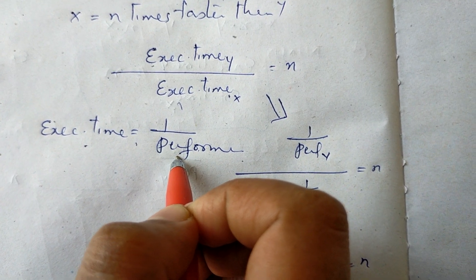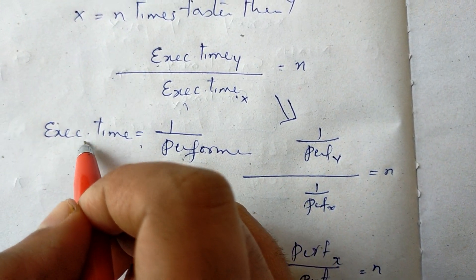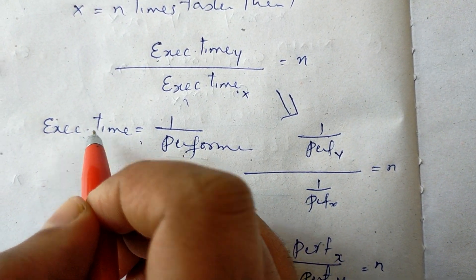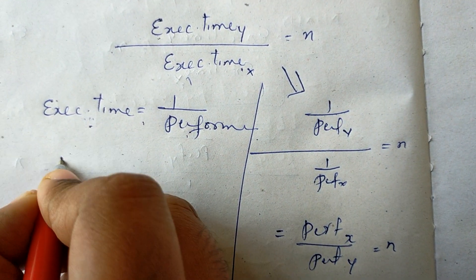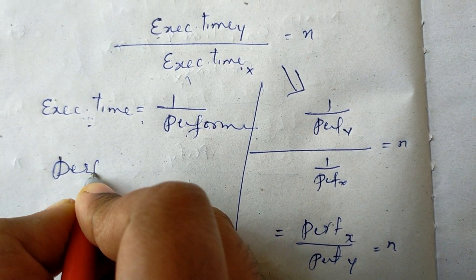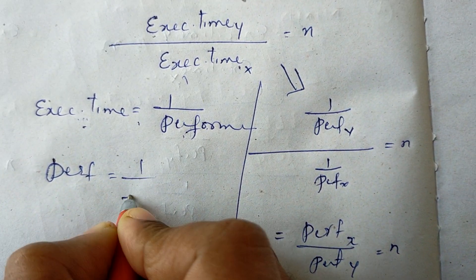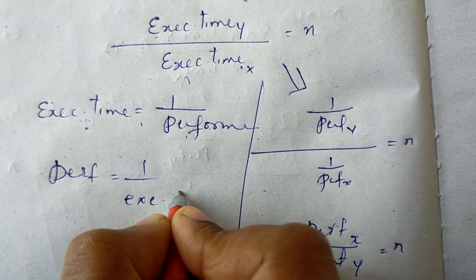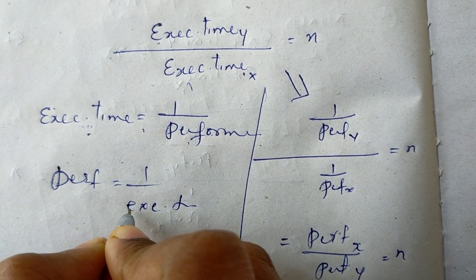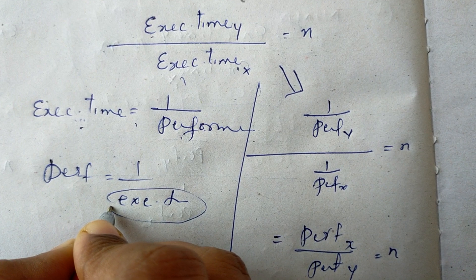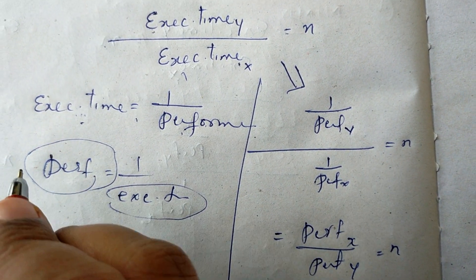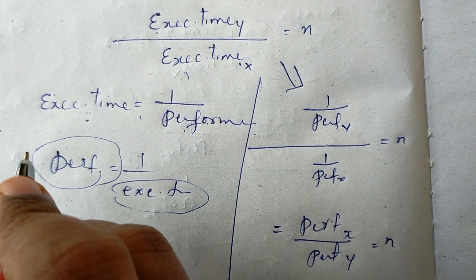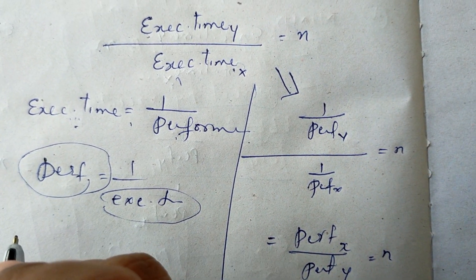X is n times faster than x by execution time. Execution time is the same as the performance — performance is the inverse of execution time.